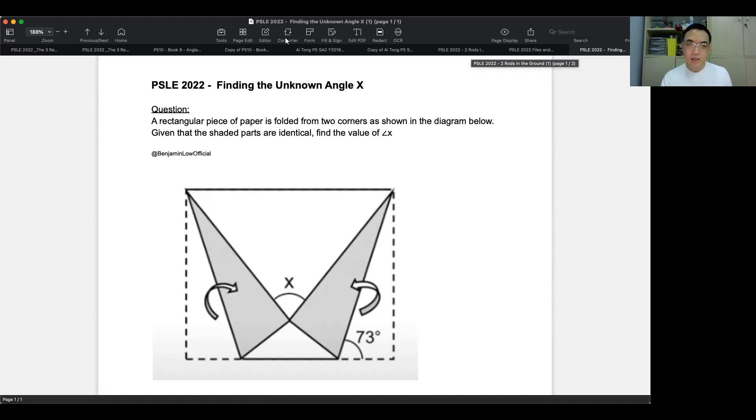So right now, we can see that it says there's a rectangular piece of paper, as shown over here, with the two corners folded in. So basically what that is trying to say is that this corner is folded over here, this corner is folded over here.